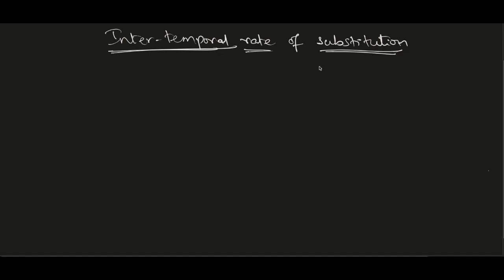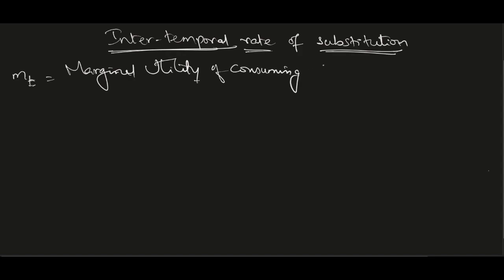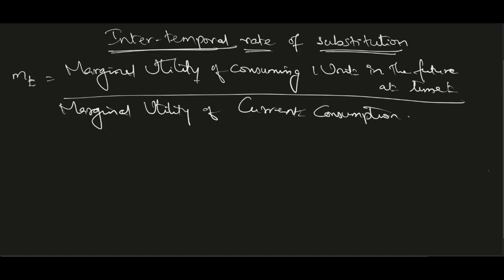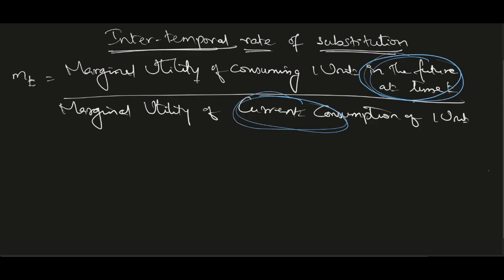The intertemporal rate of substitution is basically a ratio written as MT, where M represents marginal utility and T is for time. It is the marginal utility of consuming one unit in the future at time t against the marginal utility of current consumption of one unit. Basically, it is about current consumption versus future consumption.